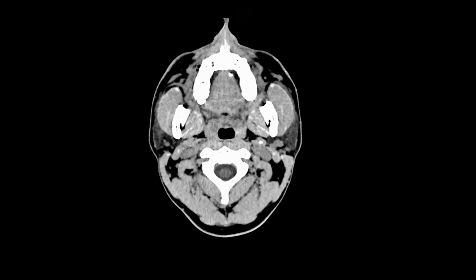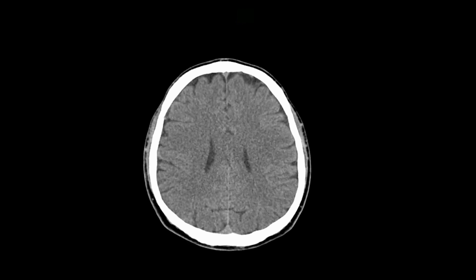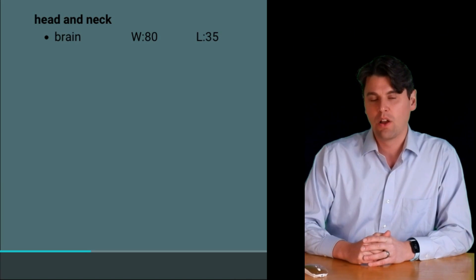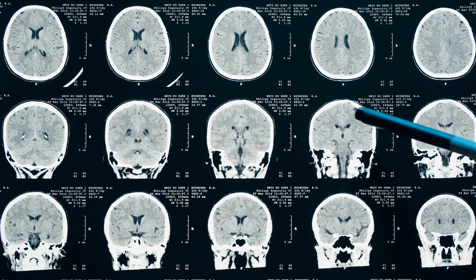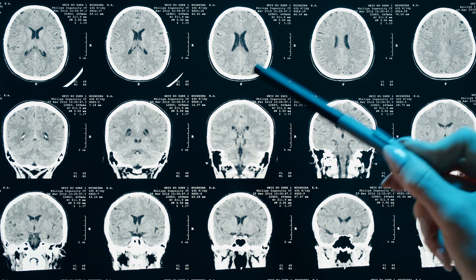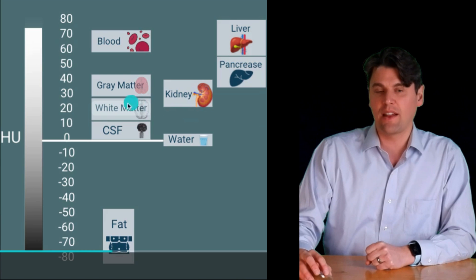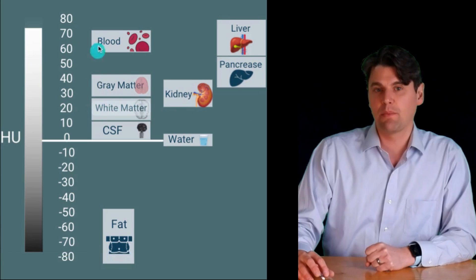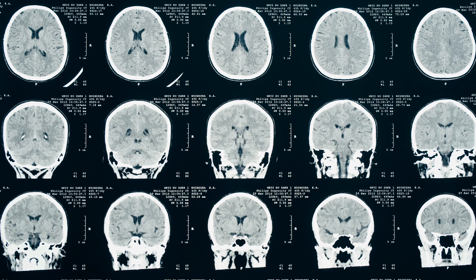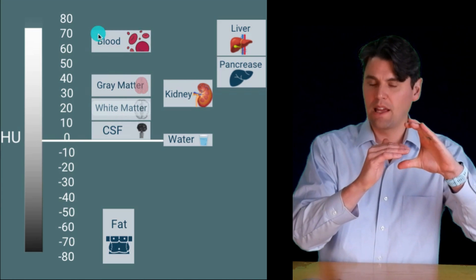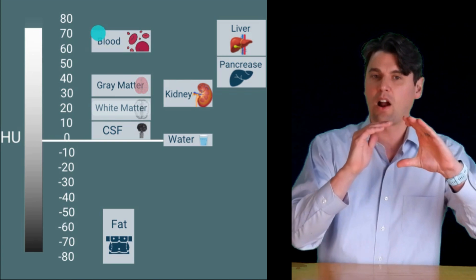The brain is actually the most often imaged organ on CT, and it's important to get your windows right — there are actually multiple windows you need depending on what you're looking at. For standard brain imaging, you want to be centered around 35 Hounsfield units with a width of about 80 Hounsfield units. This allows you to differentiate well between the gray and white matter of the brain.